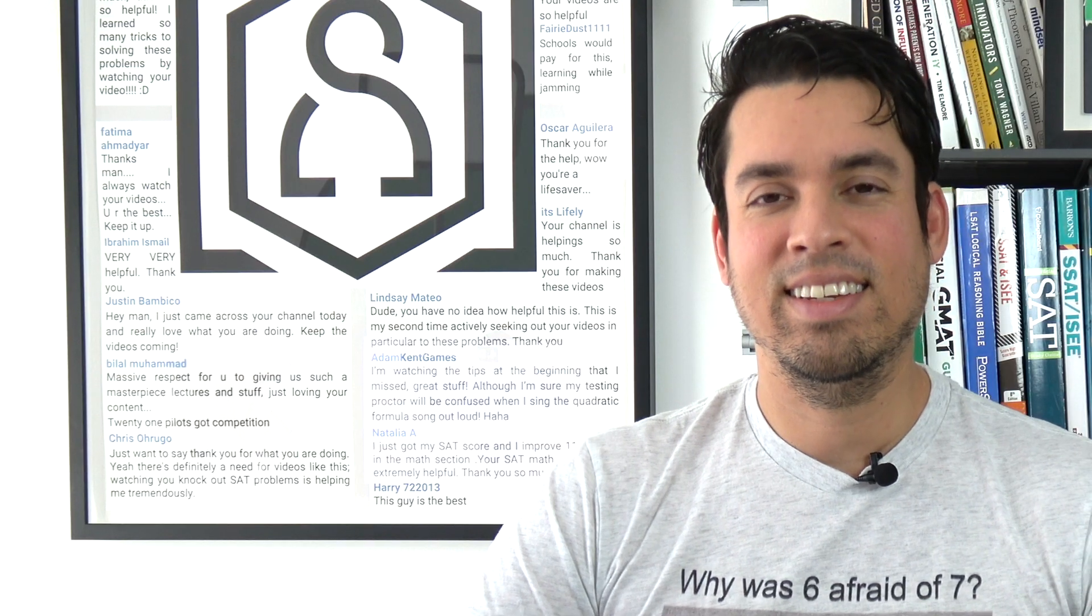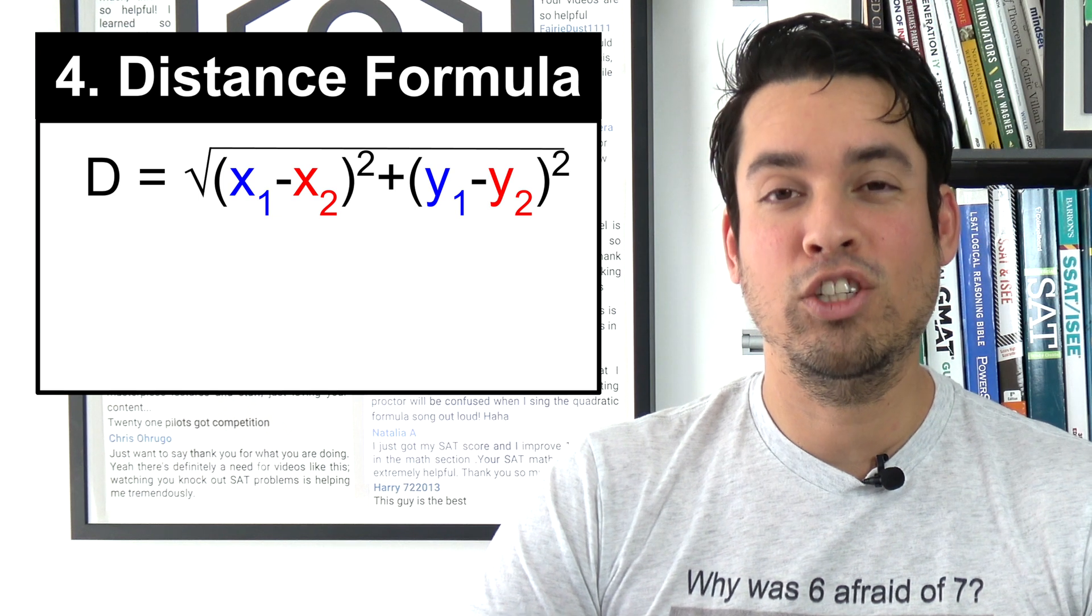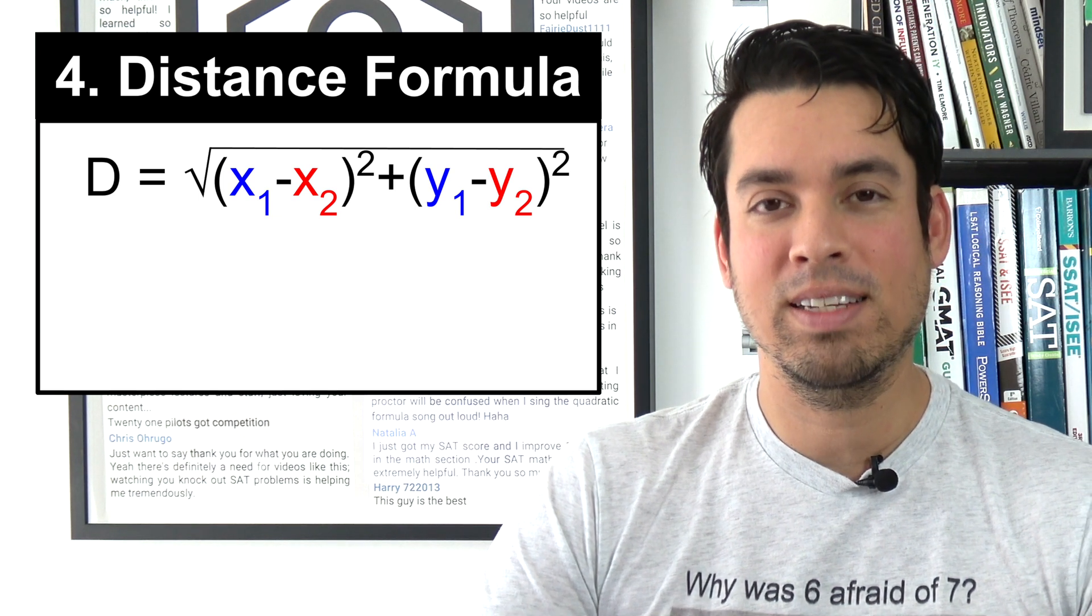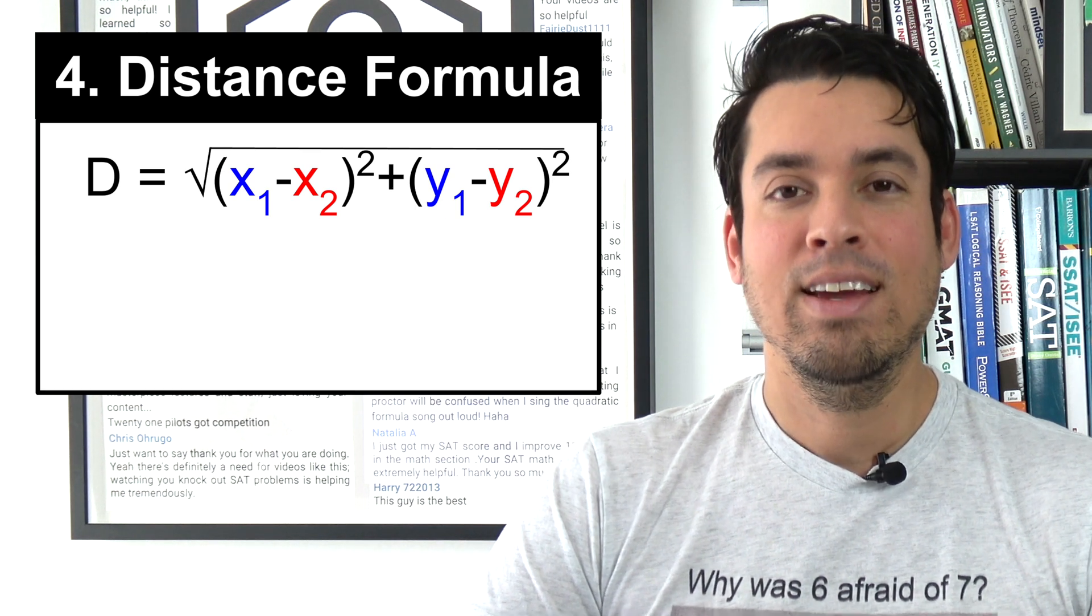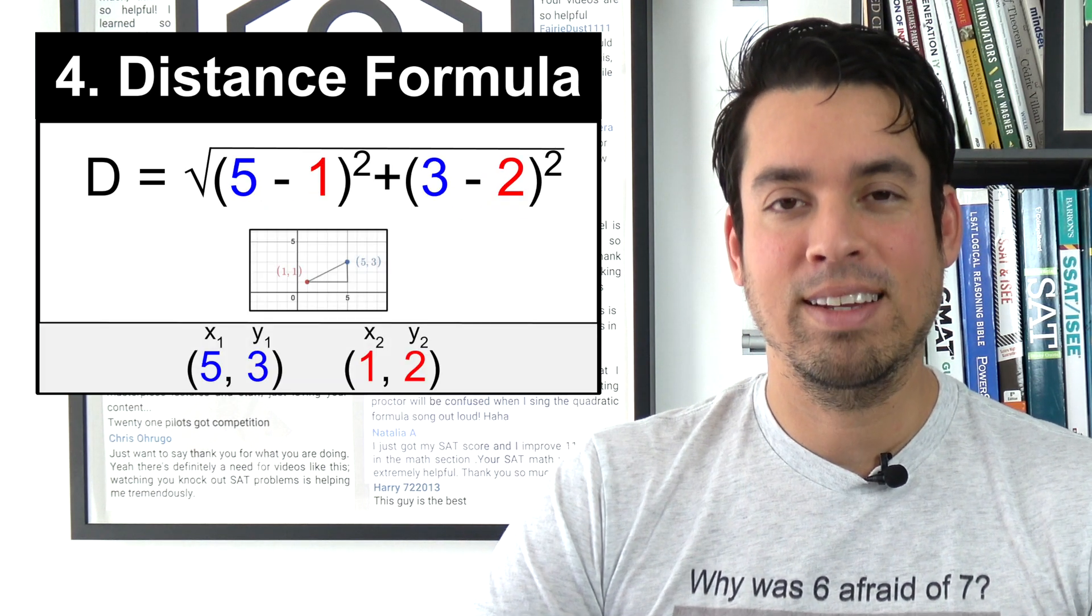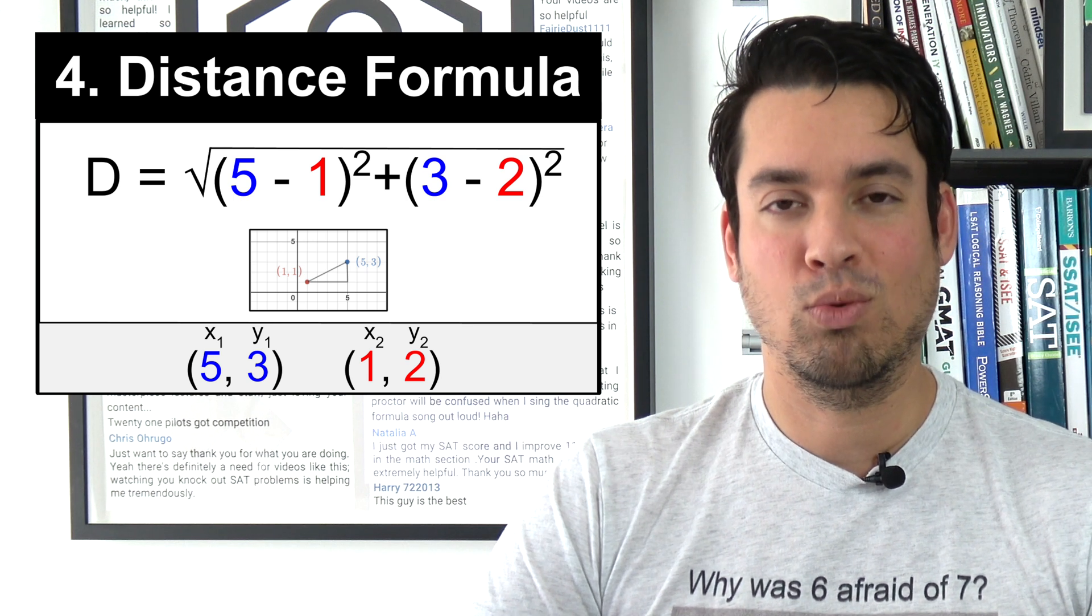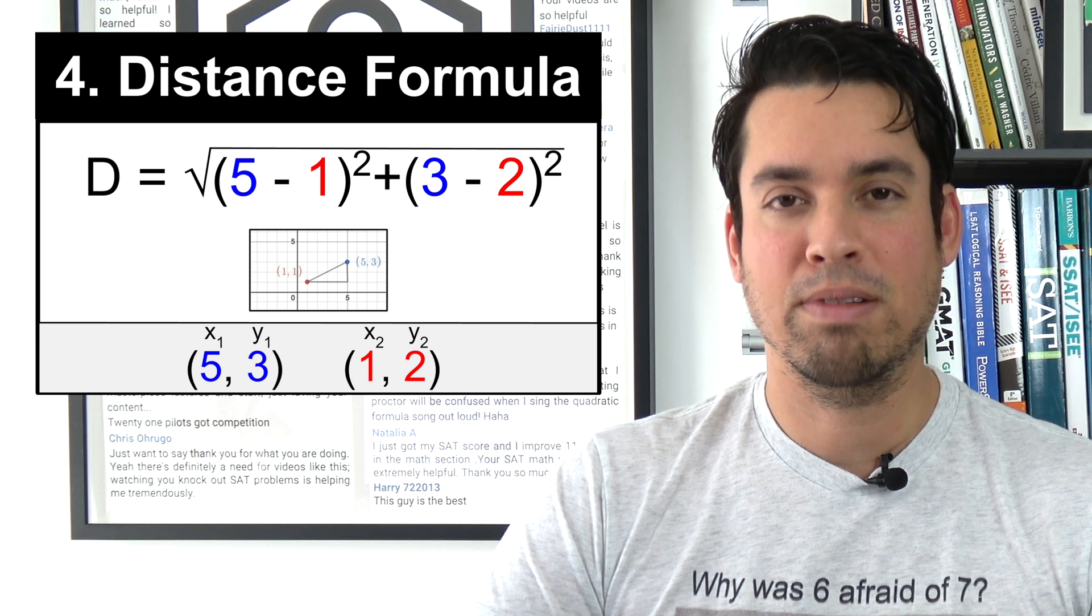Next on the list is the distance formula, which is the square root of x₁ minus x₂ squared plus y₁ minus y₂ squared. Again, find your two points, plug them in, and this will give you the distance between those two points on a coordinate plane.